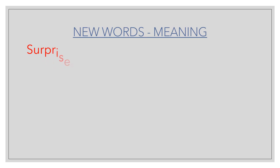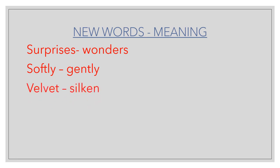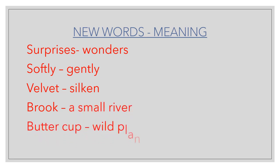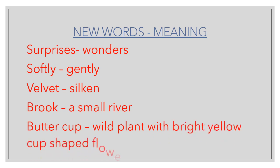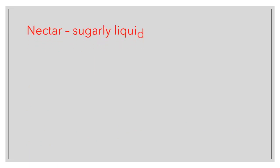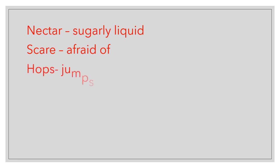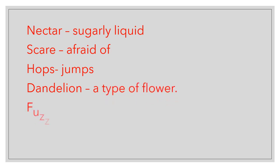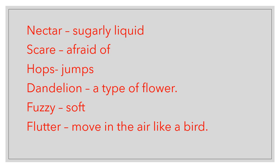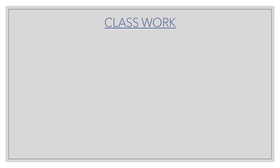New words and meanings: Surprises — wonders. Softly — gently. Velvet — silken. Brook — a small river. Buttercup — wild plant with bright yellow cup-shaped flower. Nectar — sugary liquid. Scared — afraid. Hops — jumps. Dandelion — a type of flower. Fuzzy — soft. Flutter — move in the air.